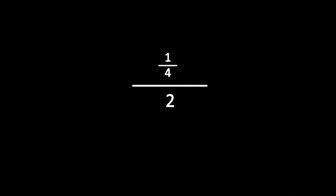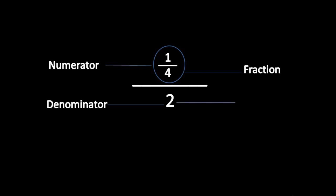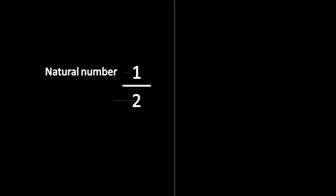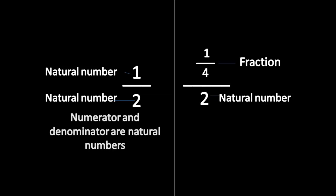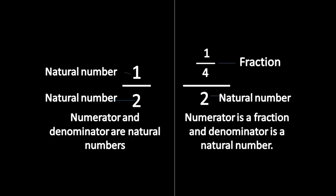Let us see another example. Is 1 by 4 a natural number? No, it is a fraction. Please note that 1 by 4 is a fraction, and 1 and 2 are natural numbers. Here, numerator and denominator are natural numbers. Here, numerator is a fraction and denominator is a natural number. This is a vulgar fraction. This is not a vulgar fraction.